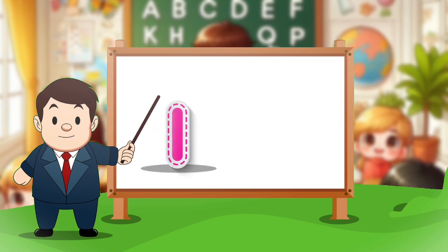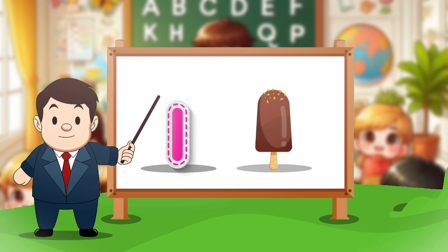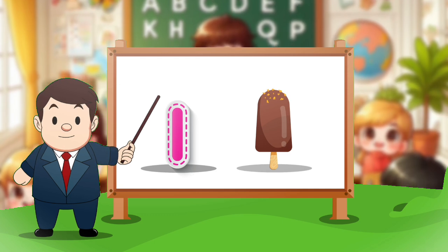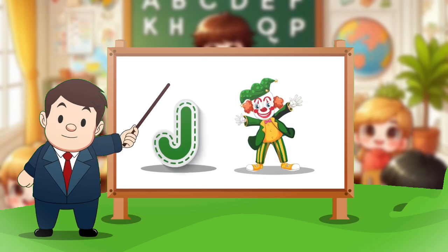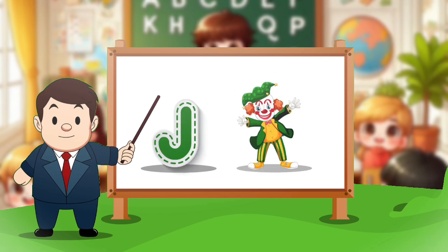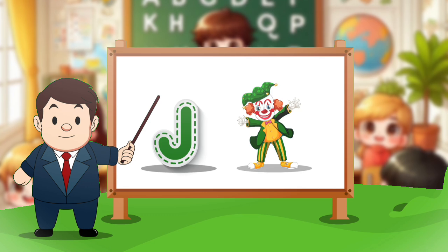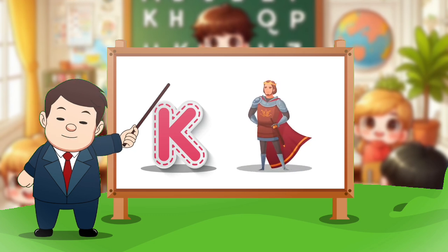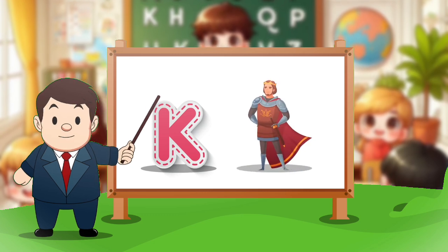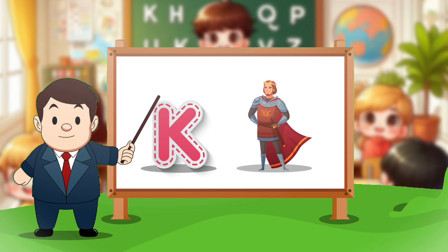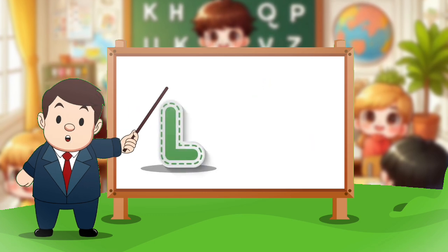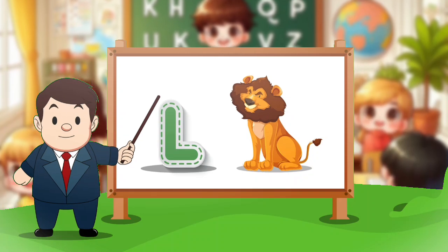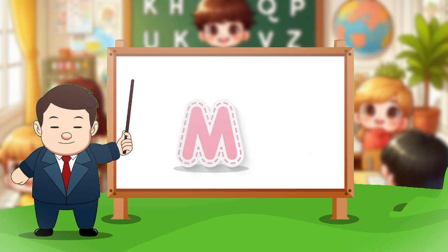I. I for ice cream. J. J for joker. K. K for king. L. L for lion.